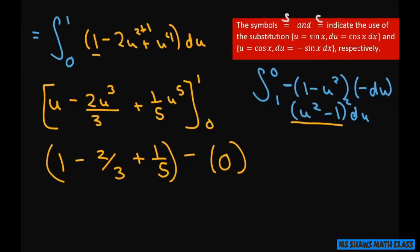And that simplifies to 15. If you have your common denominator as 15, that would be 15 minus 10 plus 3, and that equals 8 divided by 15.